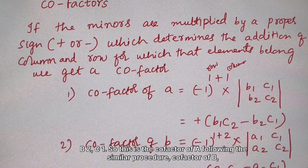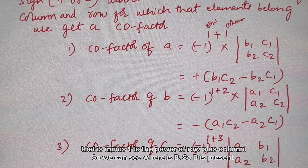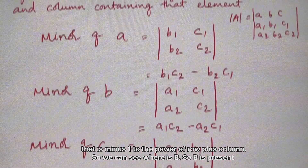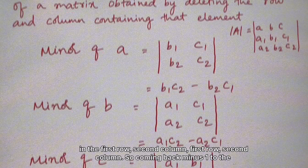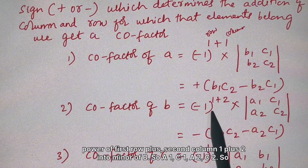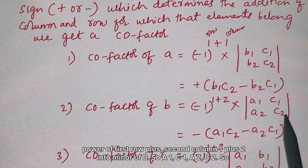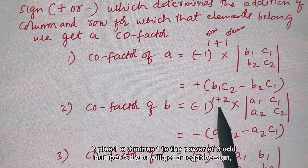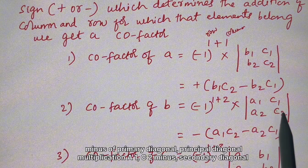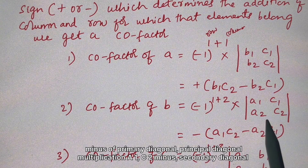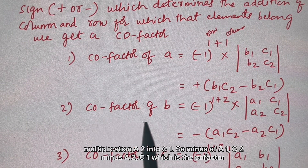Following the same procedure, the cofactor of 'b' is (-1)^(row+column). Element 'b' is in the first row and second column, so (-1)^(1+2) = (-1)^3, which is negative (odd power). The cofactor of b equals minus of (a1·c2 minus a2·c1).